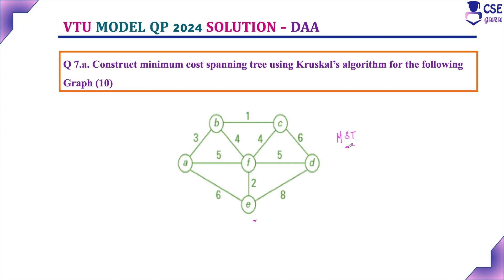What do you mean by minimum spanning tree? That is a spanning tree with the minimum cost. For this given graph we need to find a spanning tree with minimum cost, that is minimum weight.